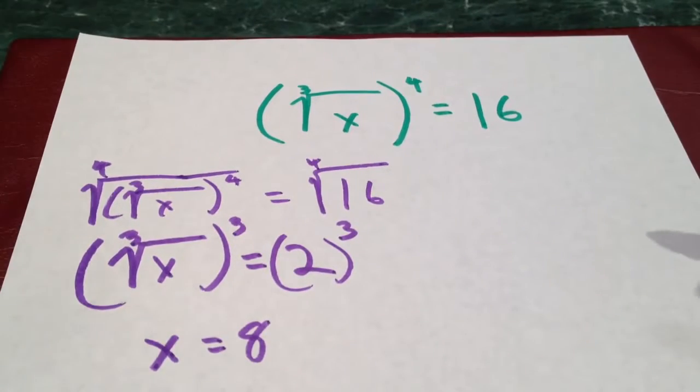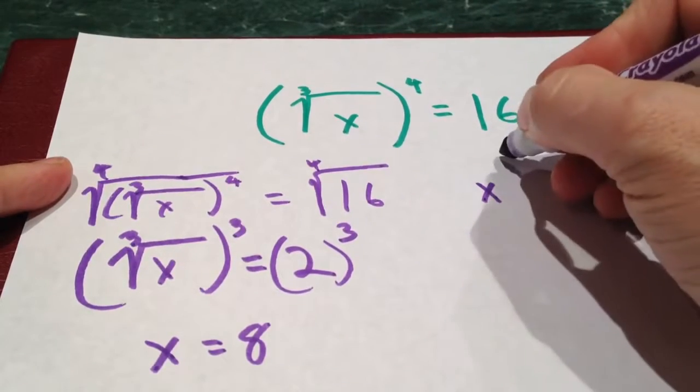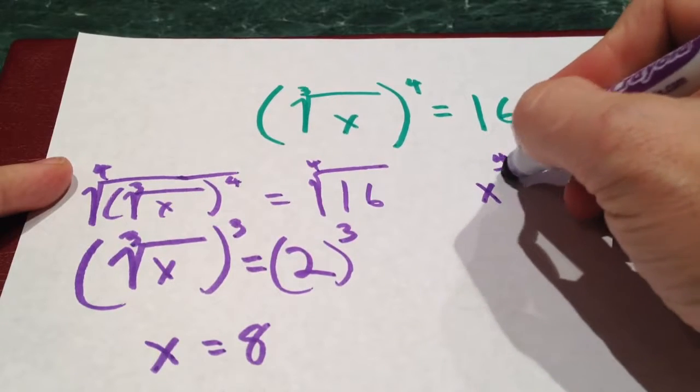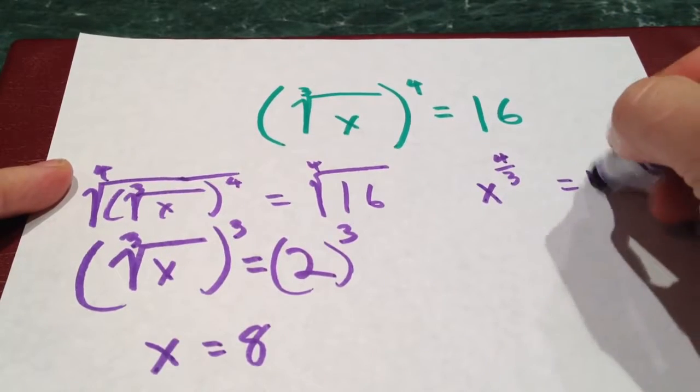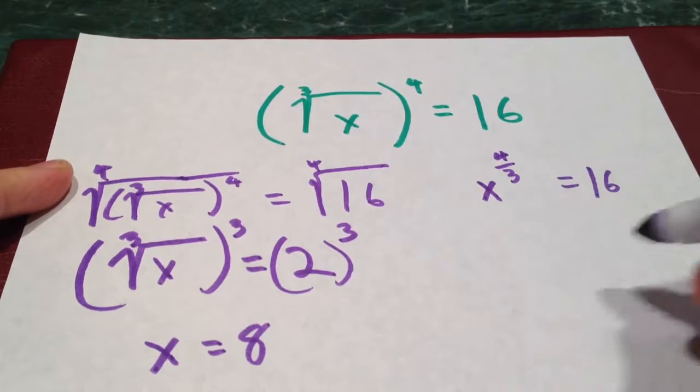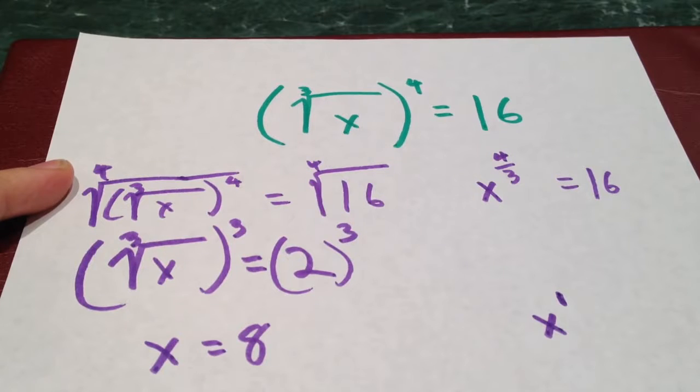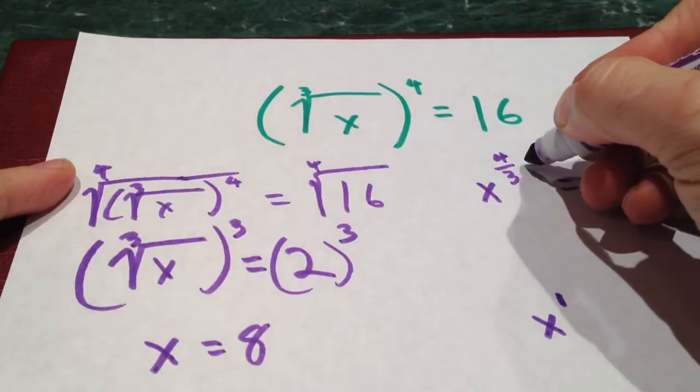Let me show you the other way to do it that's a step quicker. If I rewrite this as x to the 4 over 3 equals 16, our goal here is to get x by itself. We want to get x to the 1. So what do I need to multiply 4 thirds by to get 1 there? I need to multiply it times 3 fourths.